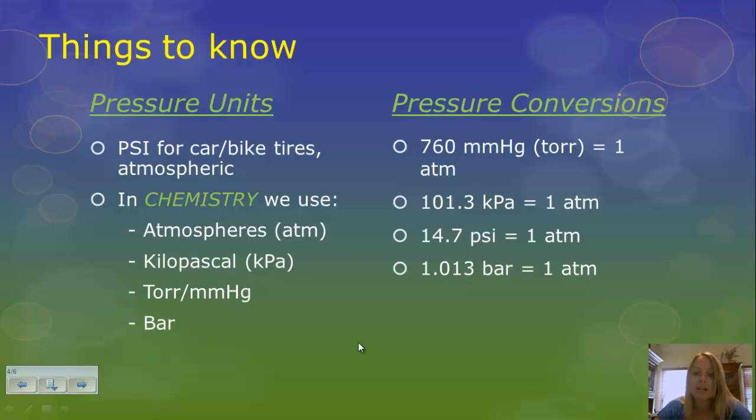So here are some conversions that we have here. We have 760 millimeters of mercury or torr equals one atm. 101.3 kilopascals equals one atm. 14.7 pounds per square inch equals one atm. And 1.013 bars equals one atm. An atm is atmospheric pressure. So each one of these now becomes your domino conversions. This allows you to convert and cancel out units.